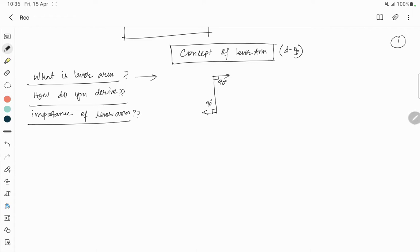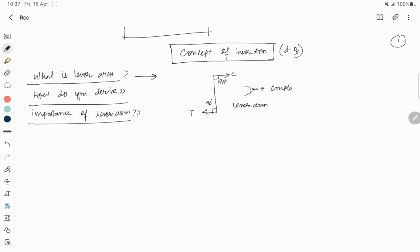In RCC, this is your compression force, this is tension force. And this whole system is known as your couple. So if you want to write the definition of the lever arm, then you can say: lever arm is perpendicular distance between the line of action of the couple, that combination of compressive and tensile force.